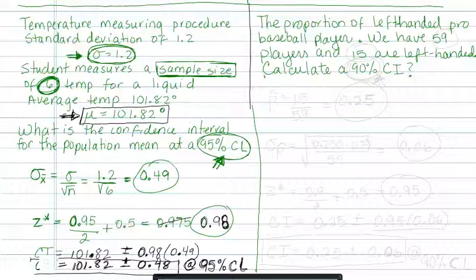The first thing that you're going to need is you have to calculate the proportion. My P-hat is my part that I'm interested in over N. I'm interested in 15 players being left-handed out of 59. 15 divided by 59 is, when you round, 0.25.